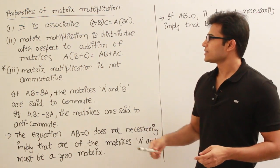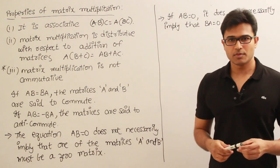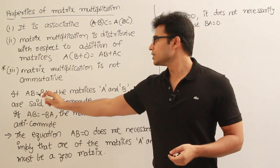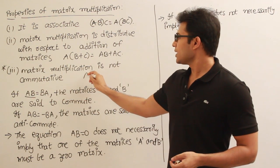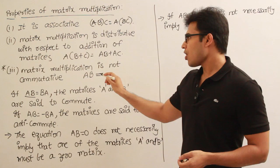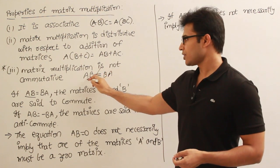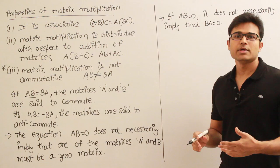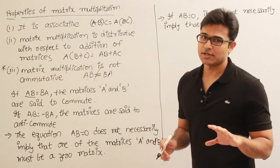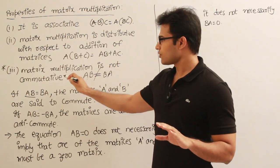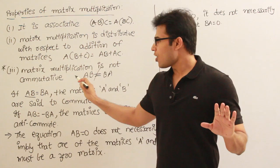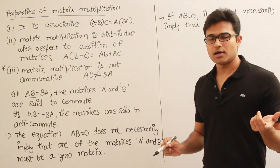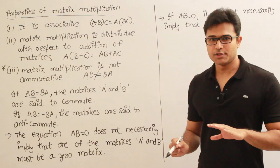Next, matrix multiplication is NOT commutative. Not commutative means A into B need not always be equal to B into A. I cannot say that A into B is always not equal to B into A either. What I mean is A into B need not always equal B into A — that is the key distinction.